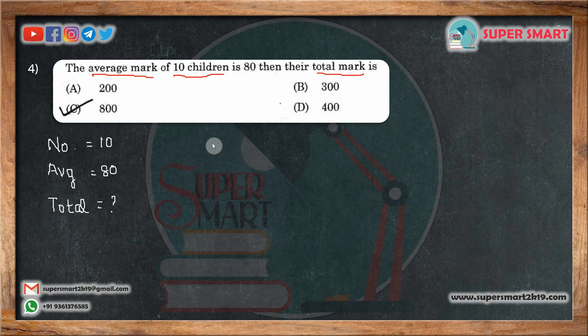We will see the average. The average is equal to the total divided by number of children.